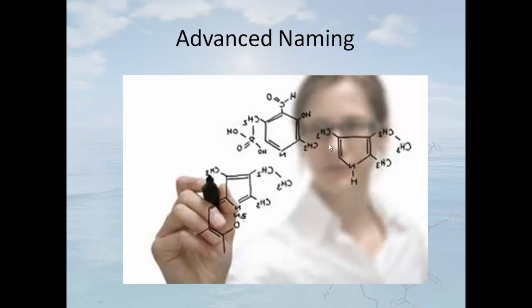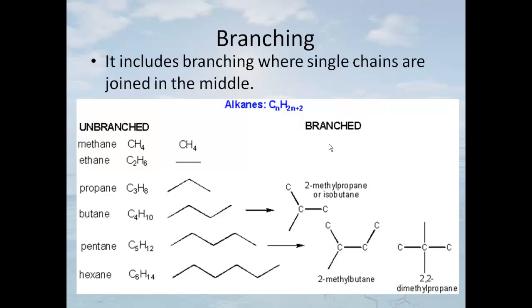Advanced naming. We are not going to go into the details for advanced naming rules. I'm just going to give you a brief heads-up of what you might see in a biochemistry course. The naming convention used includes branching where single chains are joined in the middle. So here's an example of an unbranched chain. You can see where pentane is. You have a carbon, carbon, carbon, carbon, carbon, carbon.